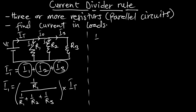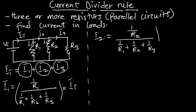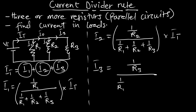The same approach applies to I2 — I2 equals (1/R2) divided by (1/R1 plus 1/R2 plus 1/R3), multiplied by the total current. Similarly, I3 equals (1/R3) divided by (1/R1 plus 1/R2 plus 1/R3), multiplied by the total current.